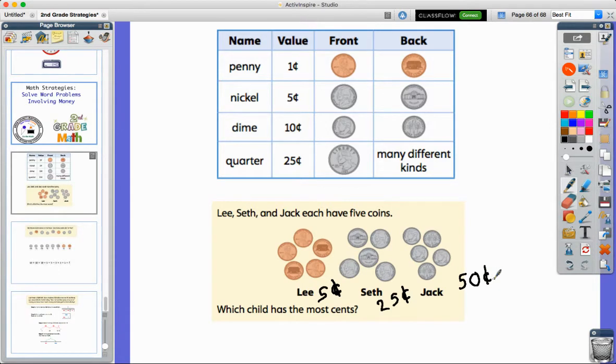If Jack was going to trade in his five dimes for something else, what could he trade it in for? What's equal to 50 cents? I don't see 50 cents on our chart, but I do know that two quarters, or two 25 cent pieces, are worth 50 cents. So he can actually trade in those five dimes for two quarters.